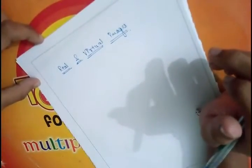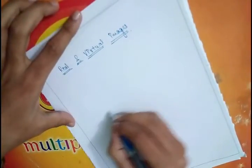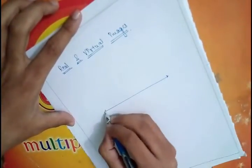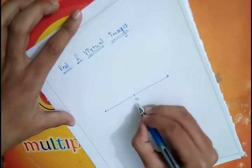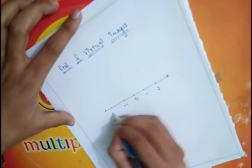I hope that you must know what is a number line. So I am drawing a number line. This is 0, this is 1, 2, minus 1, minus 2.